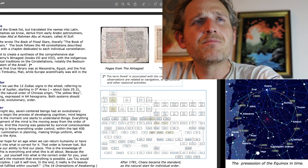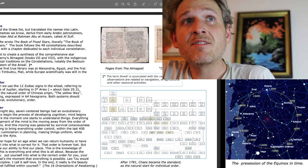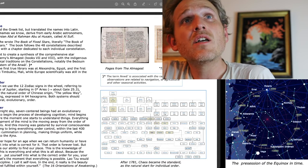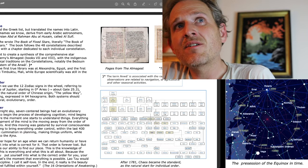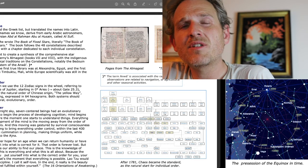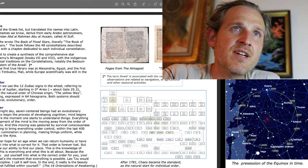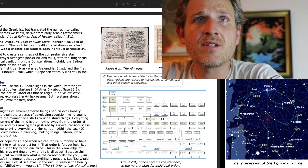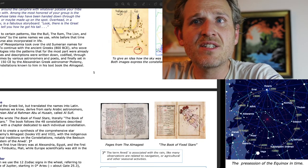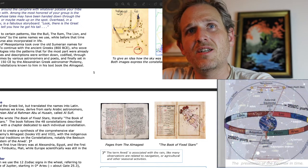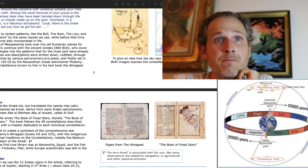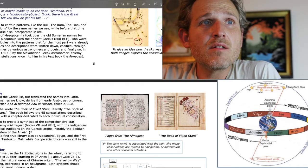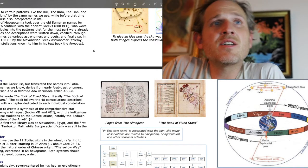Arabic influence. The Romans used the Greek list, but translated the names into Latin. Most of the star names we know derive from early Arabic astronomers, above all the Persian Abid al-Rahman Abu al-Husayn, called al-Sufi. Around 964 Common Era, he wrote the Book of Fixed Stars, literally, the Book of the Shapes of Stars. The book follows the 48 constellations described in the Almagest, with a chapter dedicated to each individual constellation. And we actually have, this is pretty incredible here, I'll scroll down so you can see, these are pages from the Almagest and the Book of Fixed Stars. I mean, how incredible is that?